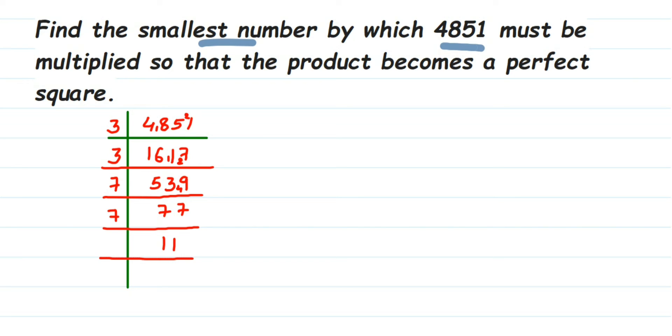Now once we have done the prime factorization, we're going to write down this once again. We're going to write down the factors what we got. So 4851 is equal to—write down all the factors what we got—it's 3 into 3 into 7 into 7 into 11.